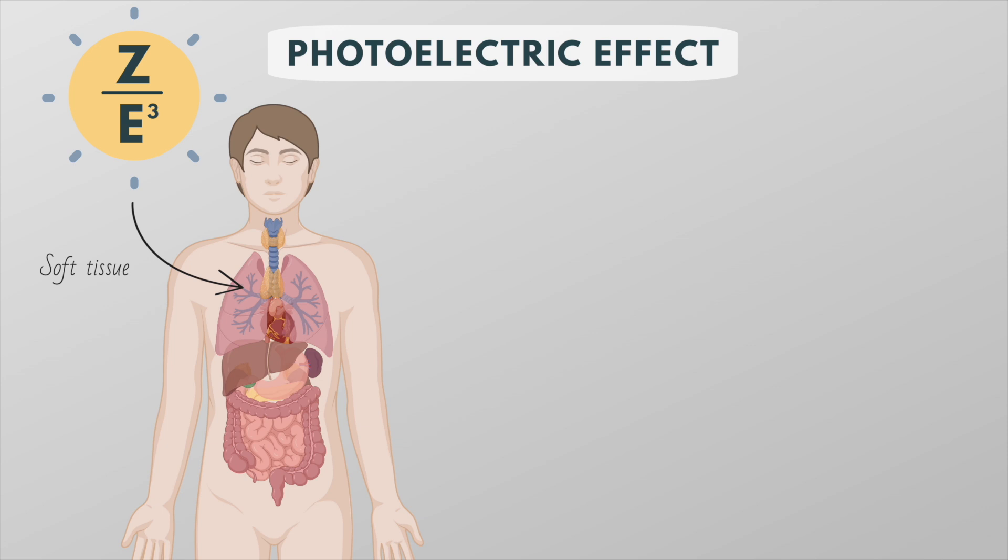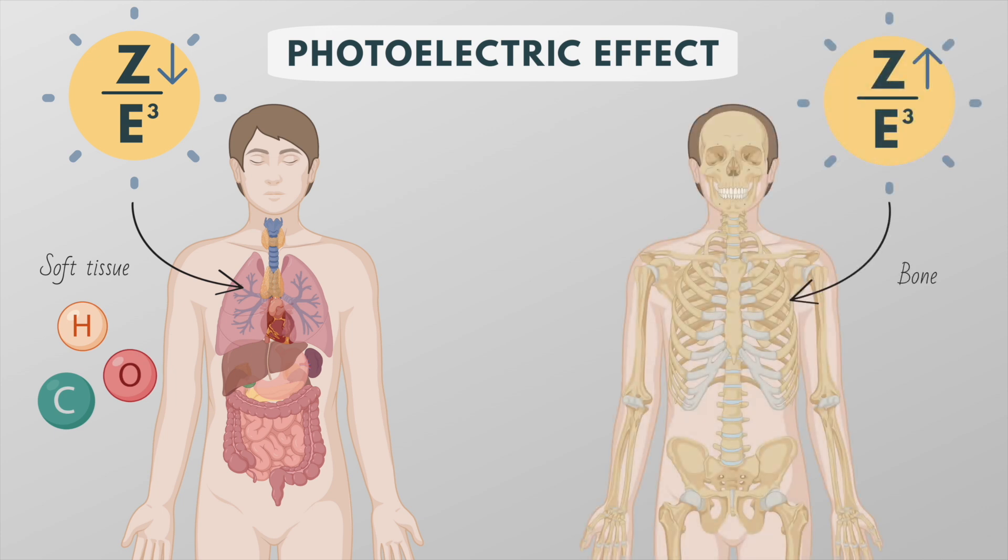Soft tissue is made up of low atomic number elements such as hydrogen, oxygen and carbon, while bone is made up of higher atomic number elements such as calcium and phosphorus.